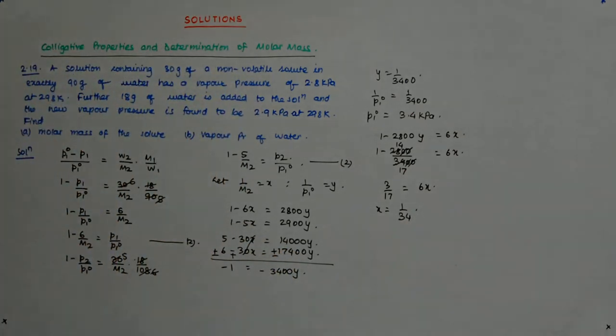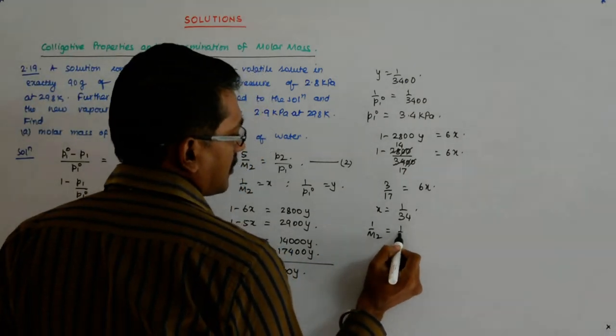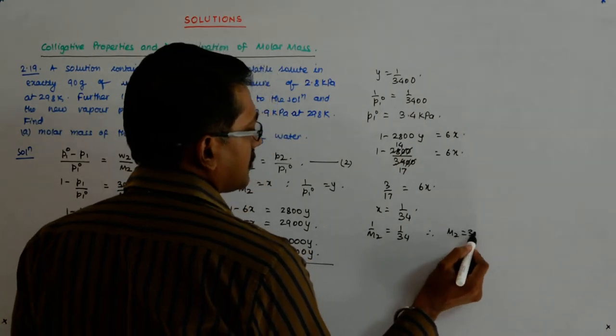Which is 1 by M2. 1 by 34. Therefore, M2 is equal to 34.